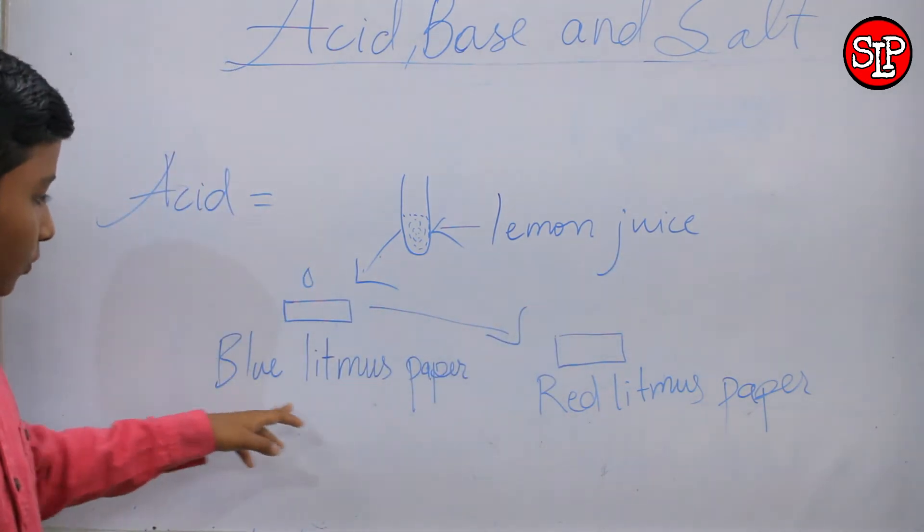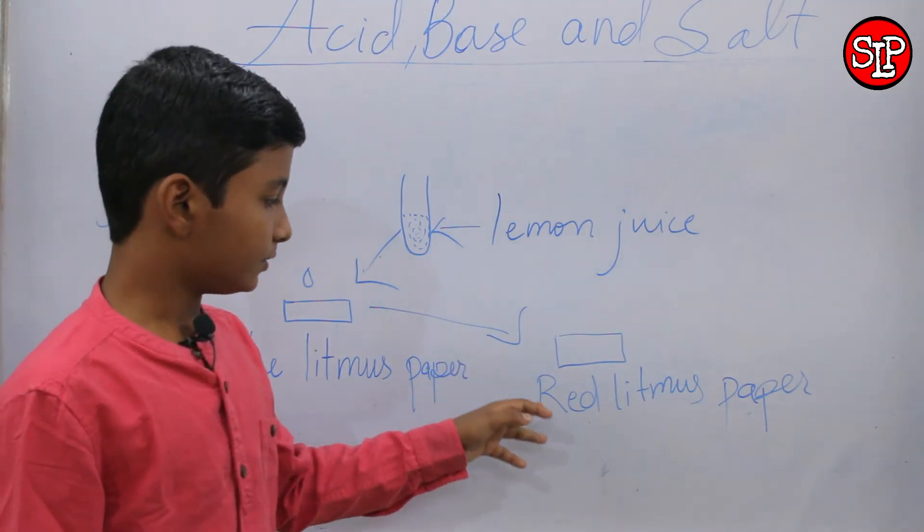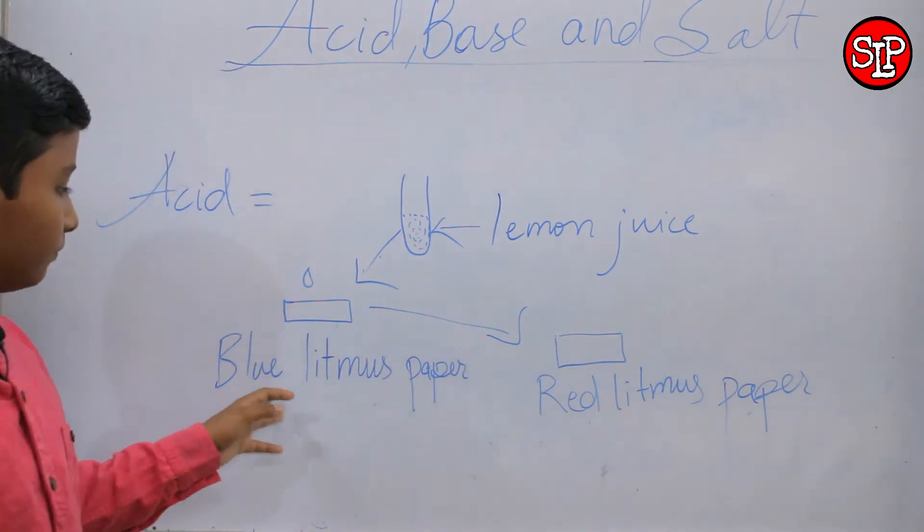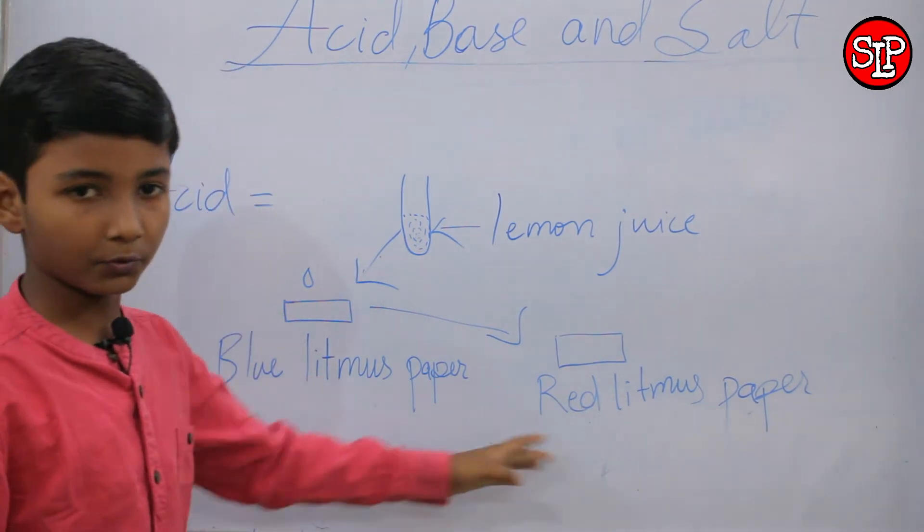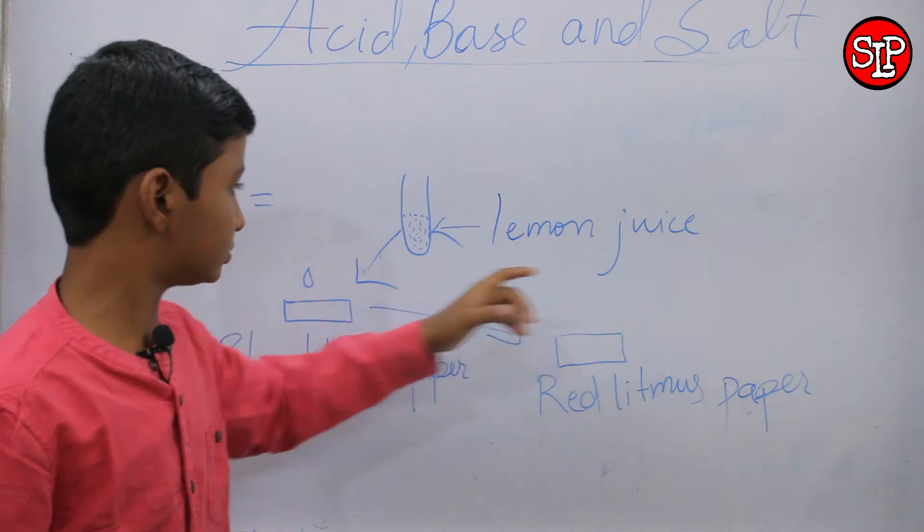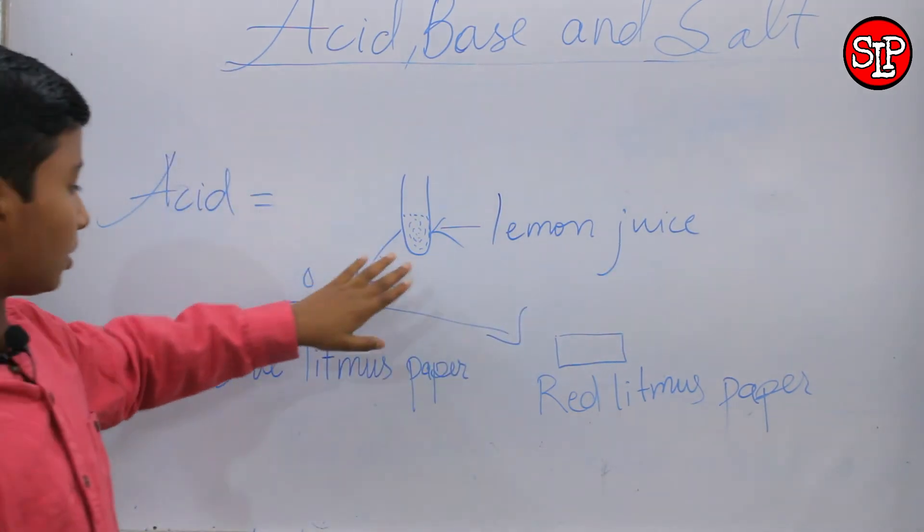After that you will see that the color of blue litmus paper will be changed into red litmus paper. So we have proved that lemon juice is acid because the color of blue litmus paper changed into red litmus paper.